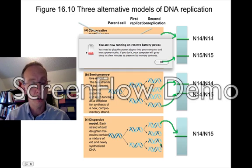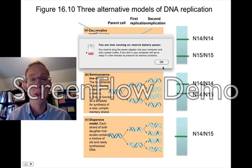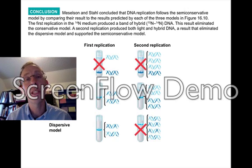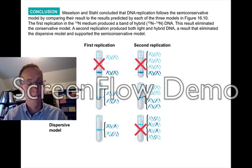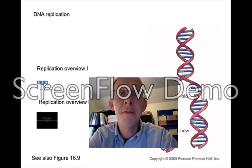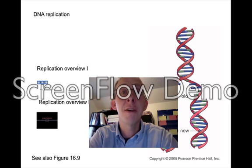What did Meselson and Stahl really see? They saw two bands: one representing N14/N14 and another representing N14/N15 molecules after two rounds of replication. This confirmed the semi-conservative model. Given these results, all models moving forward that explained how DNA replication actually happened needed to fit within the context of the semi-conservative model. In the next video, we'll be taking a look at DNA replication and the very specific mechanisms that allow for semi-conservative replication to take place.